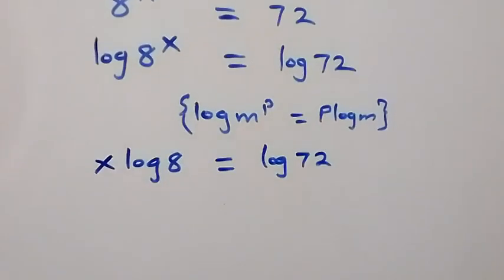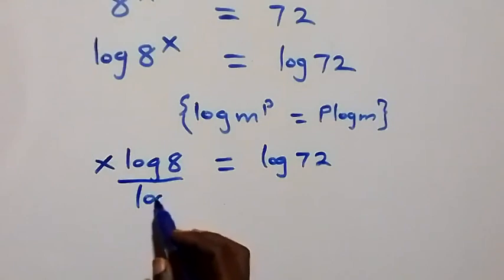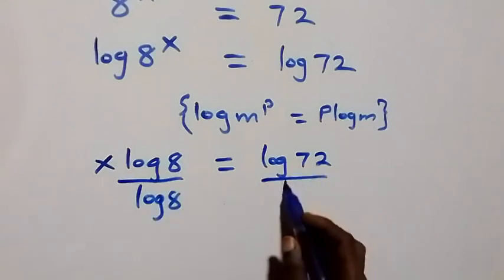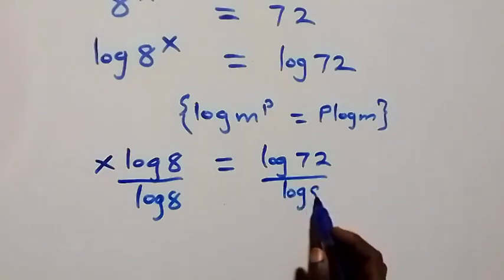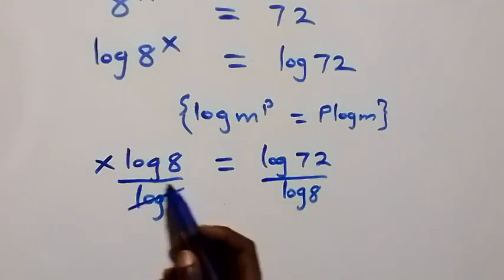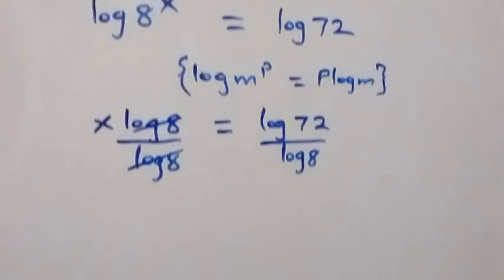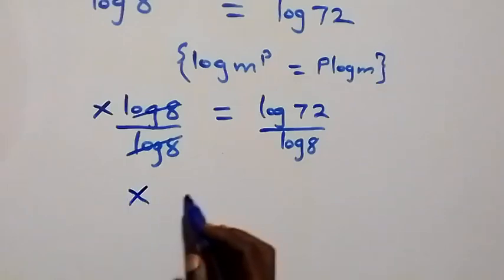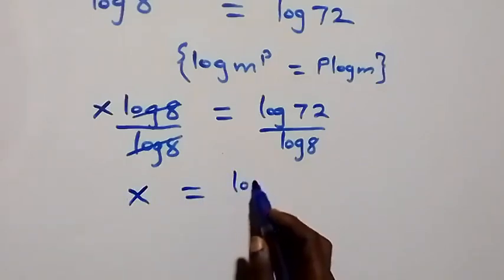From here we divide both sides by log 8. Dividing both sides by log 8, the log 8 terms cancel each other, and we have x equals log 72 over log 8.